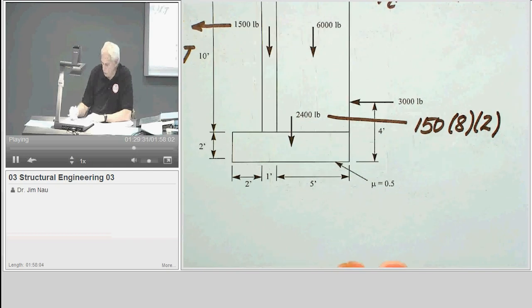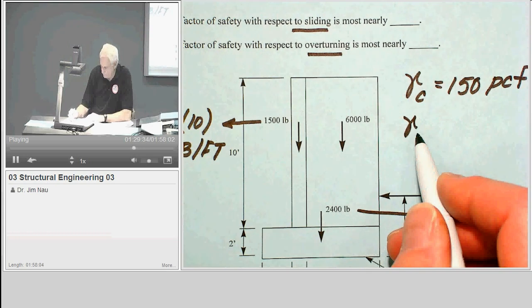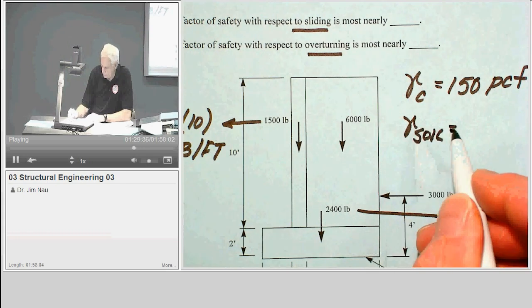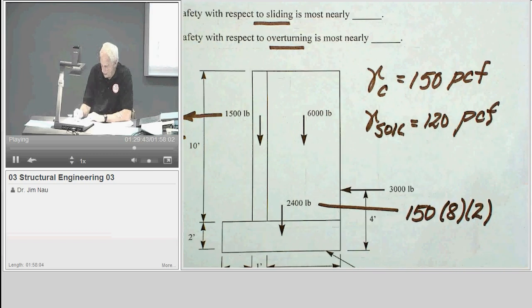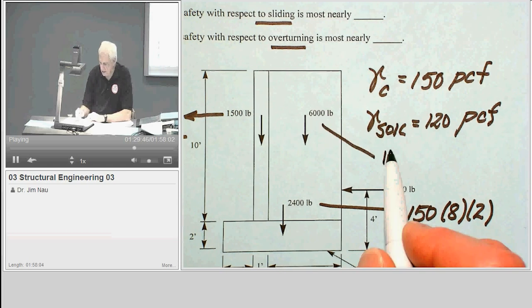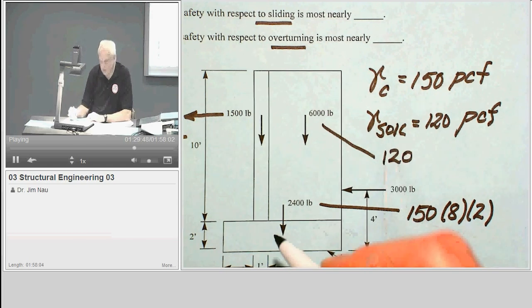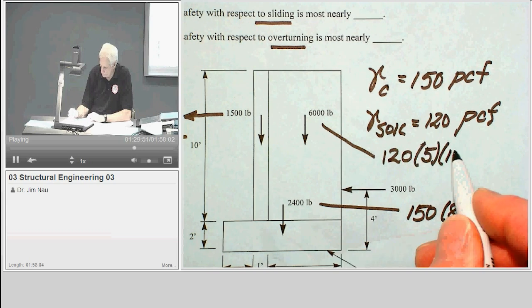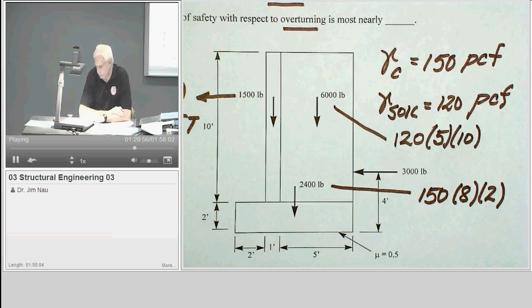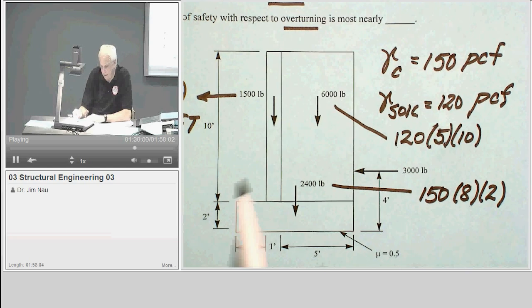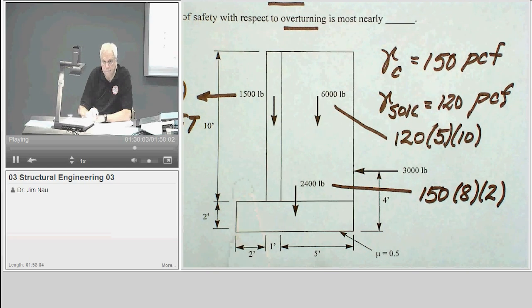The soil, I used a unit weight of 120, perhaps a little large. So the 6,000 is that 120 times 5 times 10. So in order for you to calculate these things, they have to give you the unit weights. Of course, we could assume the one for concrete. But they would at least have to give you the unit weight of the soil to get that. So again, that's 120 times 5 times 10.